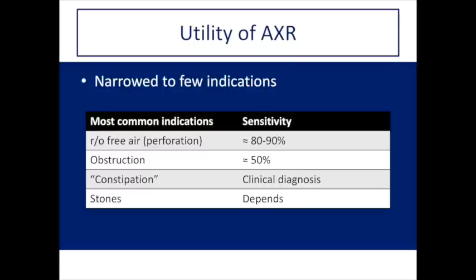Constipation is a clinical diagnosis. It is true that you can see stool in the colon on abdominal x-ray, but the colon is designed to hold stool — most people are going to have some stool there. There are published grading systems for fecal loading classifying it as mild, moderate, or severe. However, studies have shown poor inter-observer reliability and conclude the abdominal x-ray has limited utility in evaluating for constipation. For kidney stones, non-contrast CT and, in special cases, ultrasound are the test of choice. Abdominal x-ray is generally performed to see if you can see the stone and then follow it up with serial x-rays.